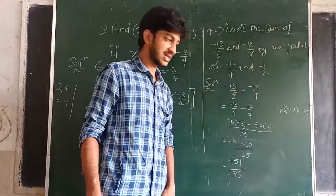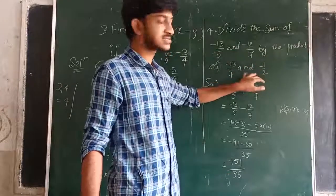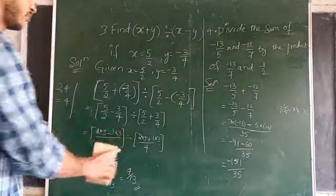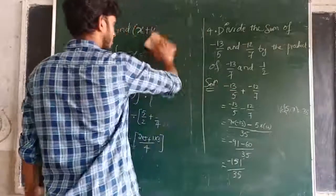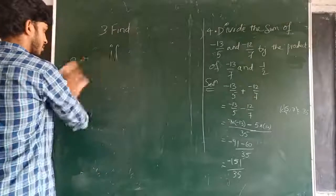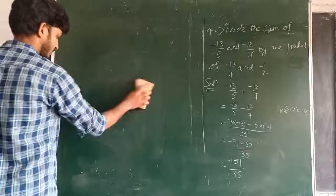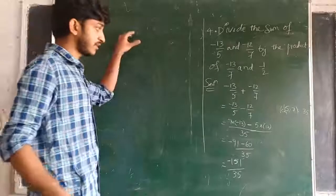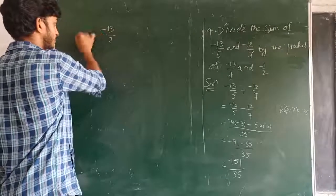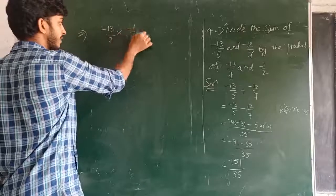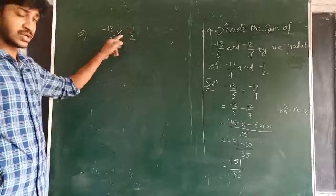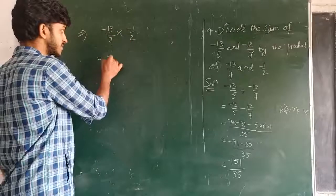Now for the product — multiplication. We have to multiply these two numbers. So I am calculating minus 13 by 7 into minus 1 by 2. Since it is negative times negative, minus into minus gives plus, so we get plus 13 by 14.